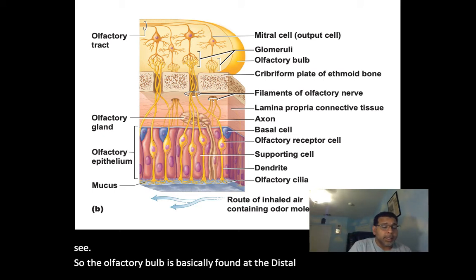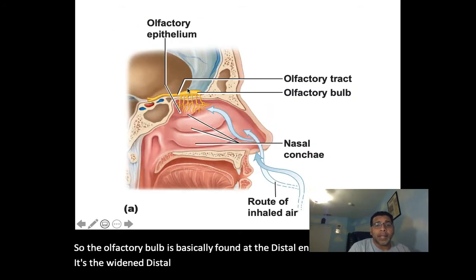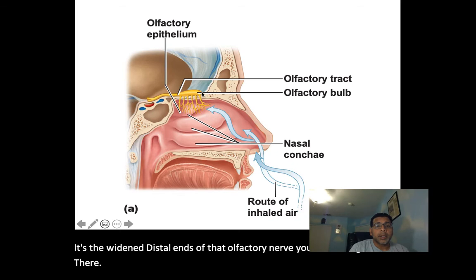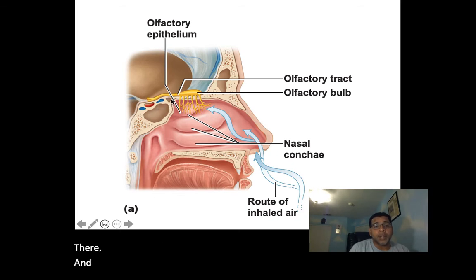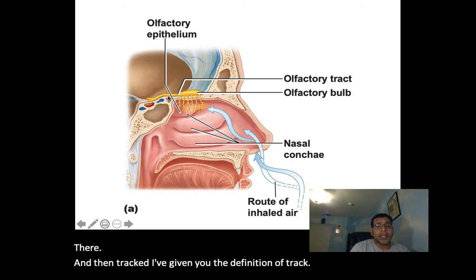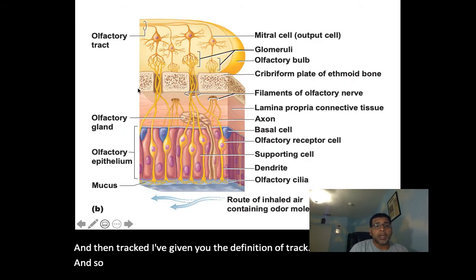This cell is a multipolar neuron — specifically a mitral cell. Signals travel between these two cells. The olfactory bulb is found at the widened distal ends of that olfactory nerve, and the tract connects it onward.